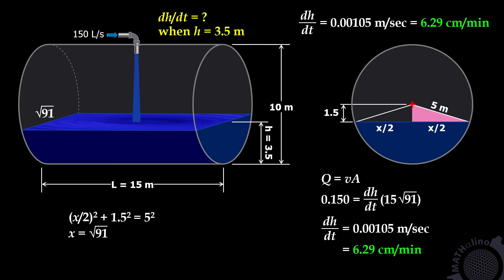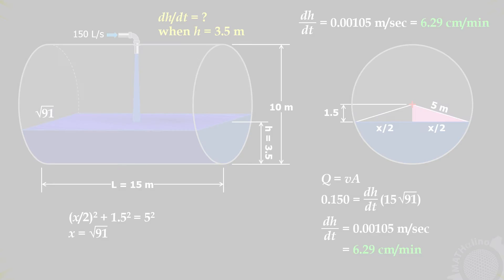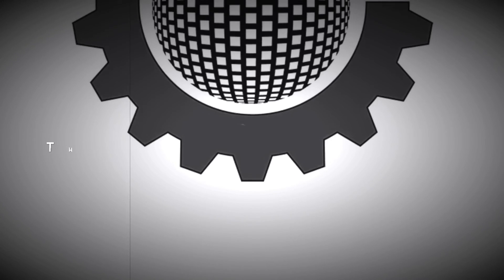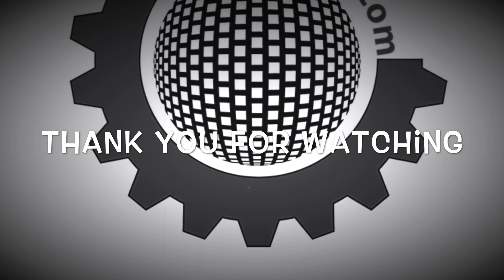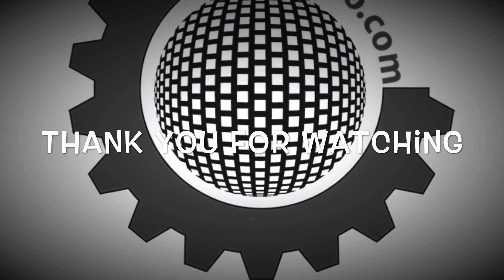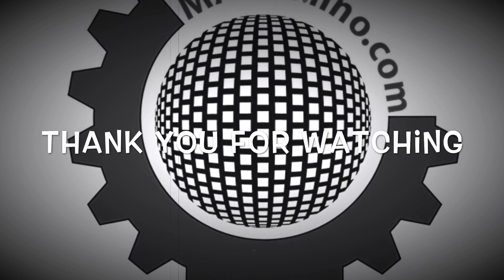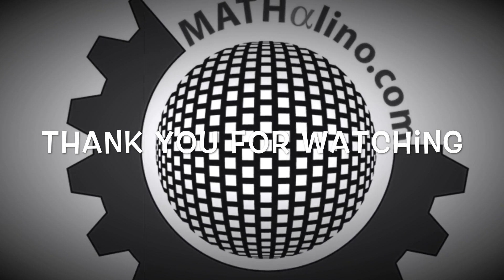Converting to centimeters per minute by multiplying by 6,000, we get 6.29 centimeters per minute, which is exactly equal to the answer in our previous solution. Thank you for watching.